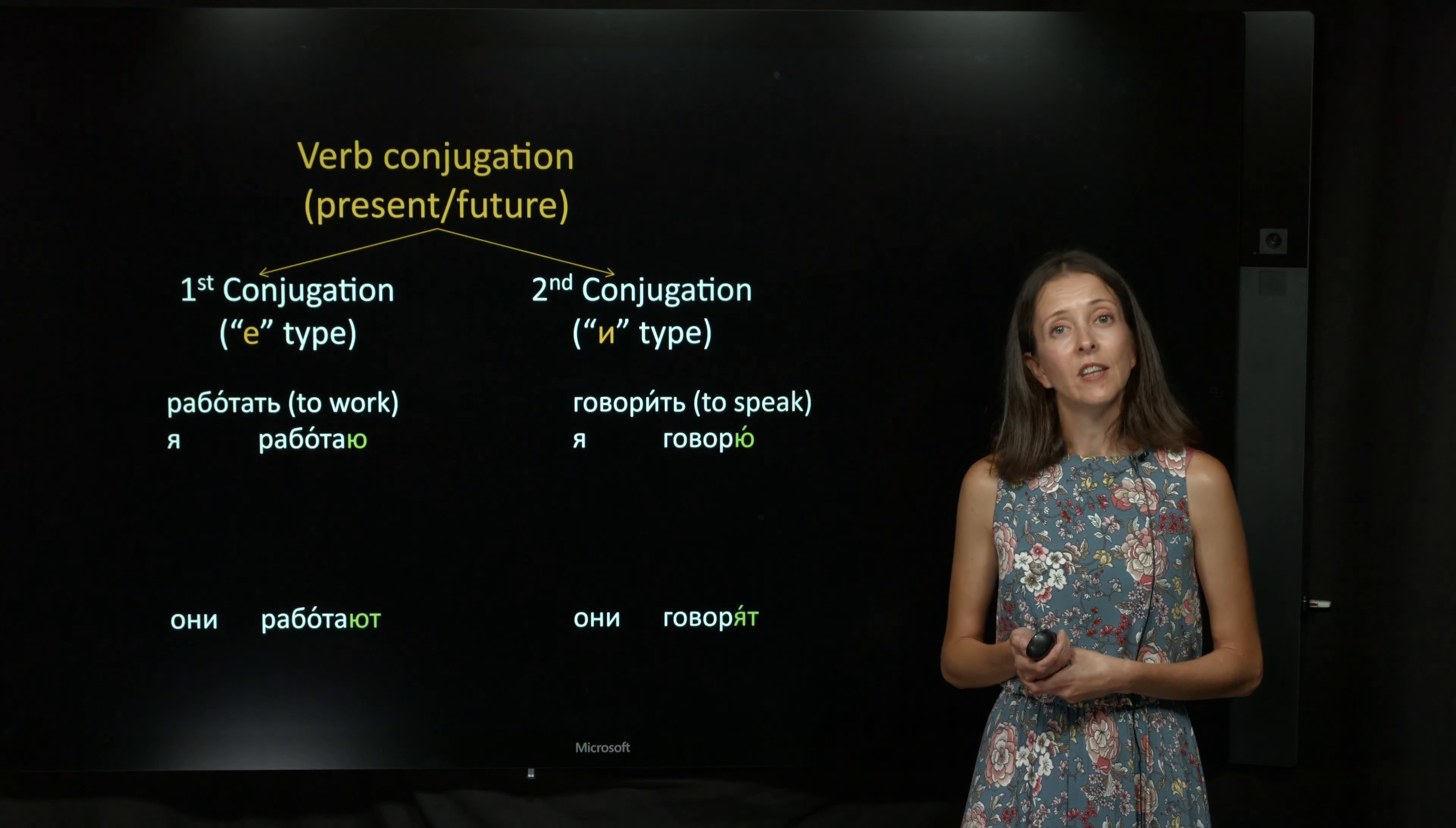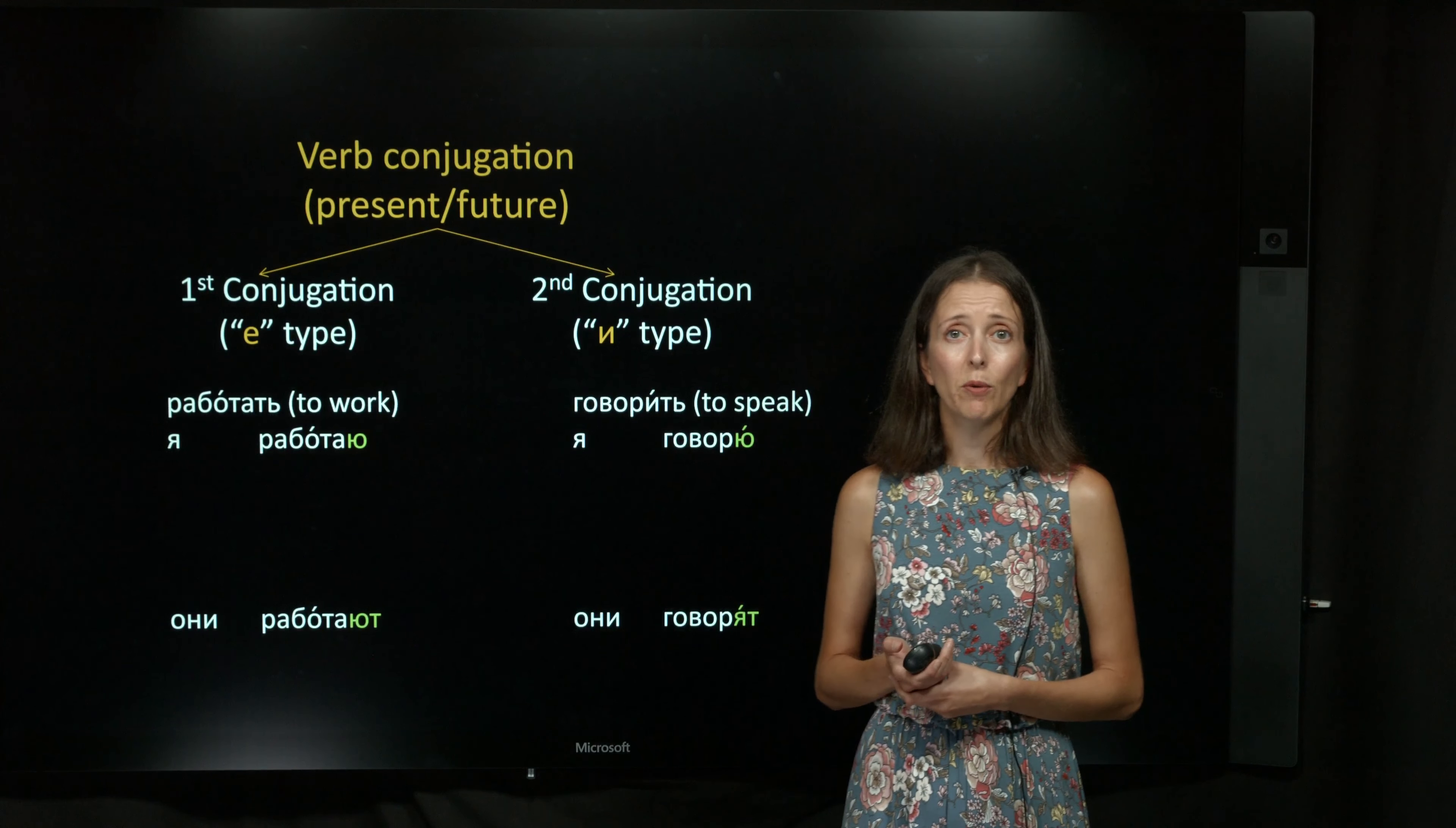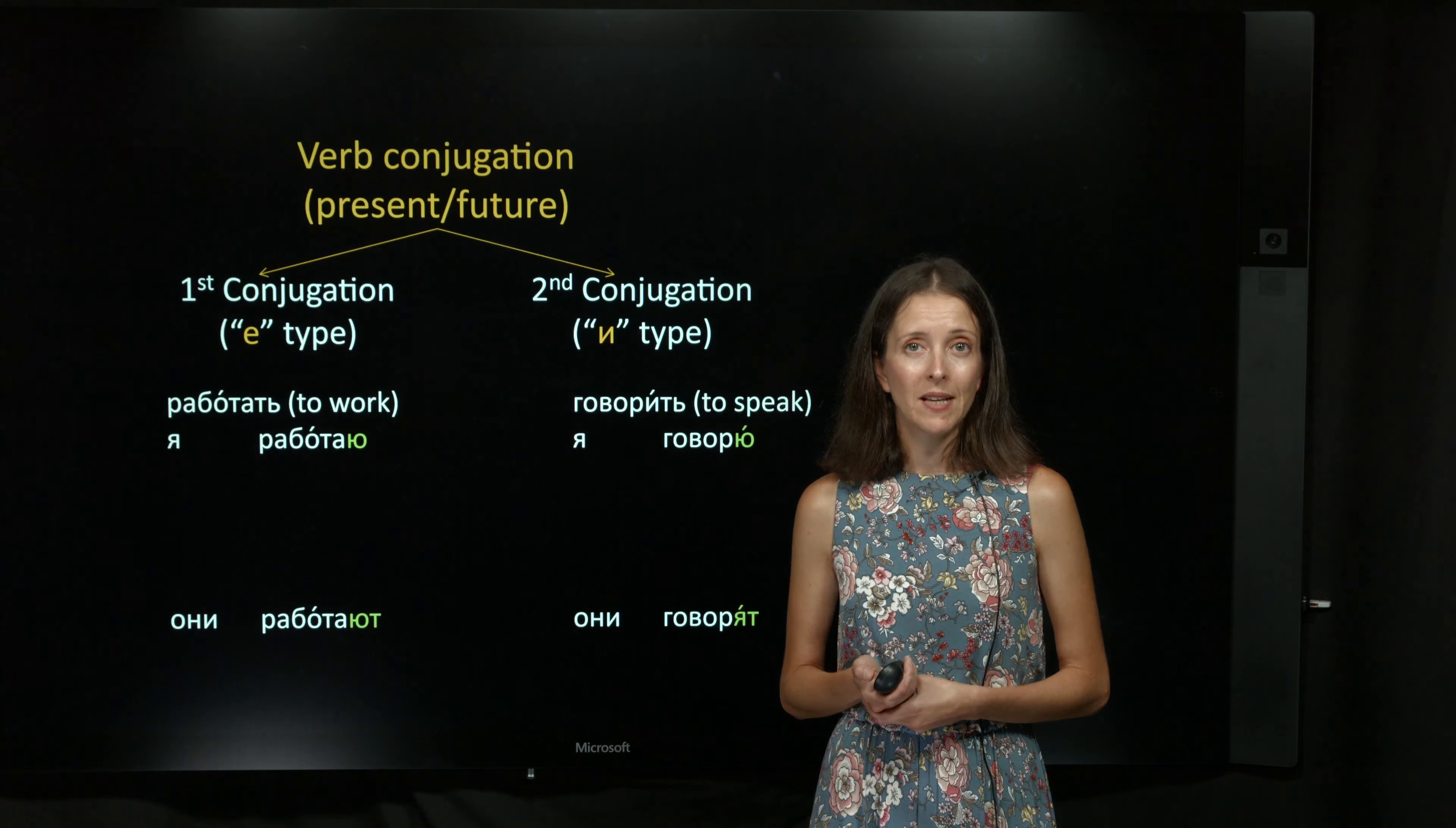The infinitive, the я form, and они form. The infinitive is, of course, the dictionary form of the verb, and you will also use it to form the past tense.